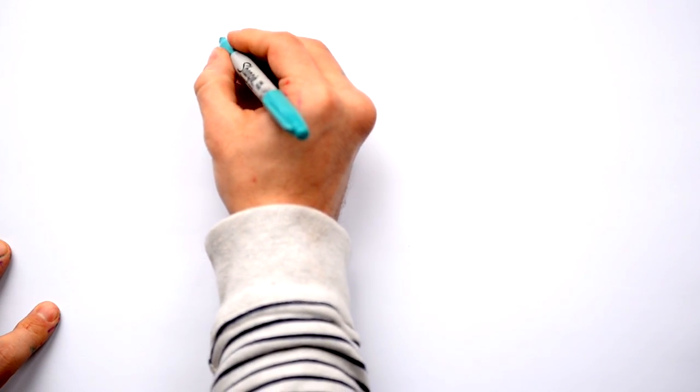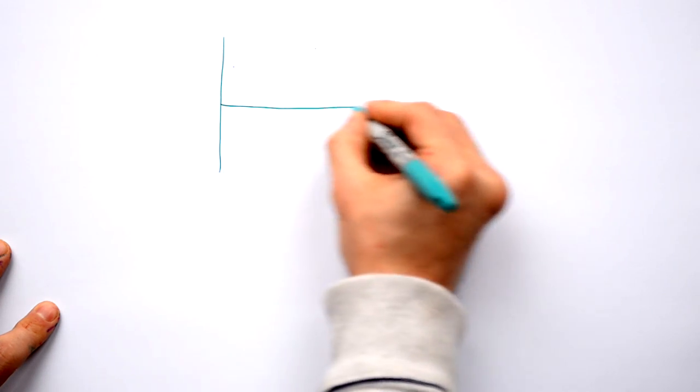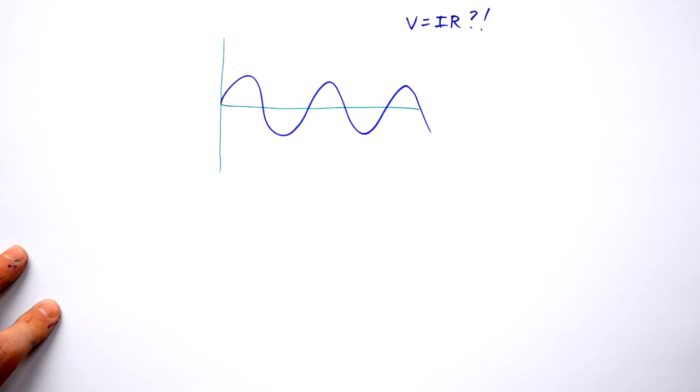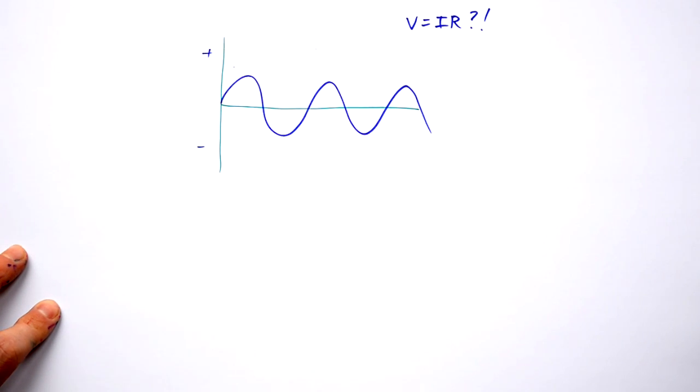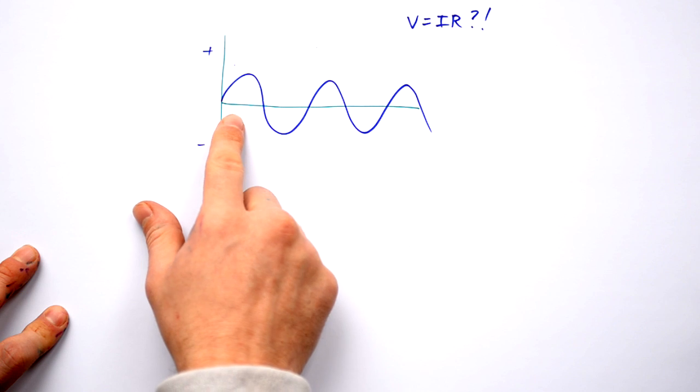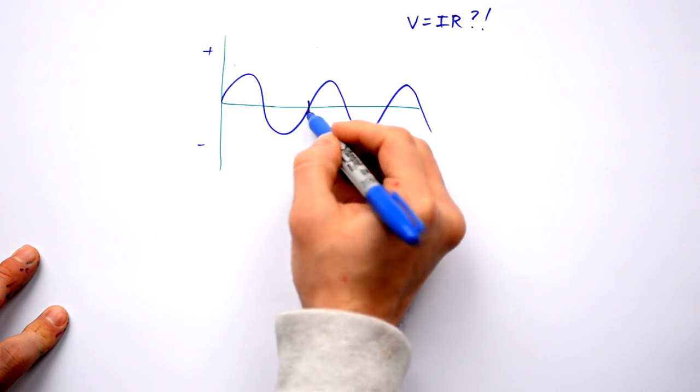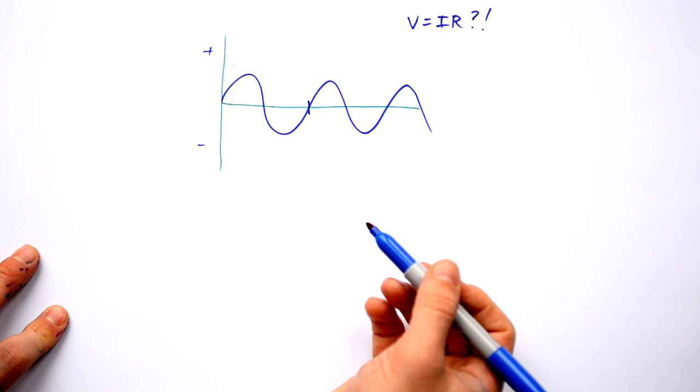Now when we have an AC trace, it's very difficult to use Ohm's law in this situation because we have a positive voltage and we have a negative voltage. If we average the voltage over a whole wave, then we end up with net zero voltage. So that doesn't really make any sense, does it?